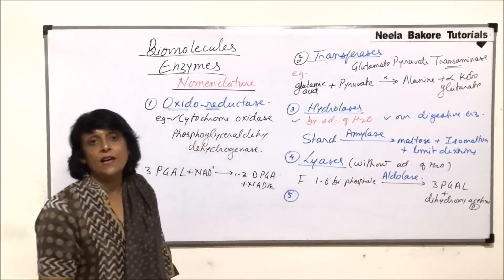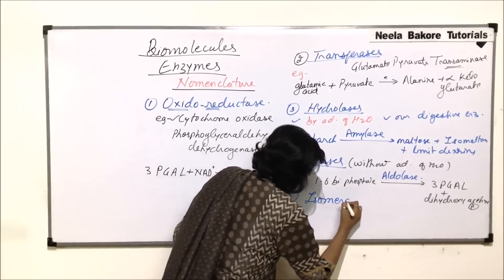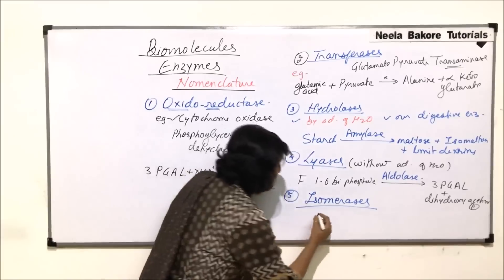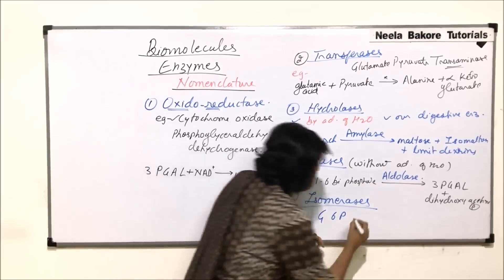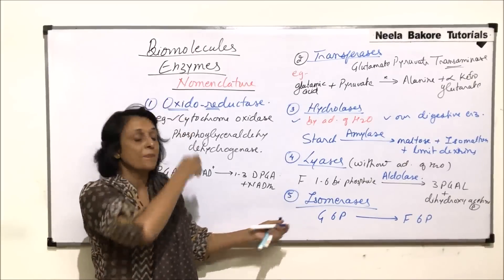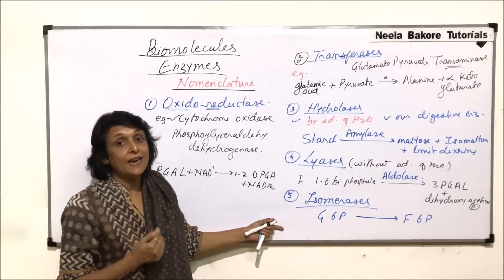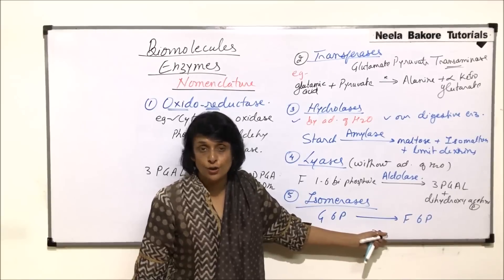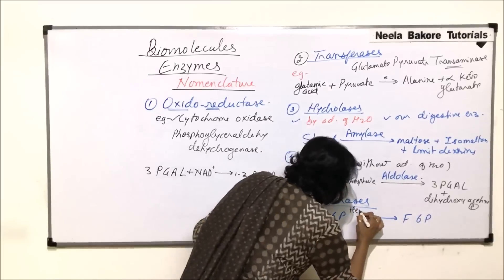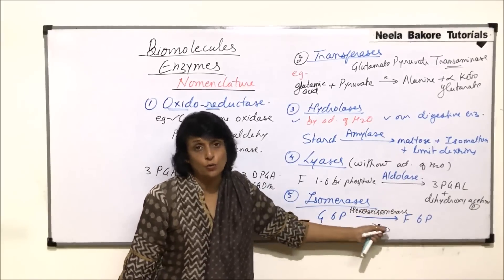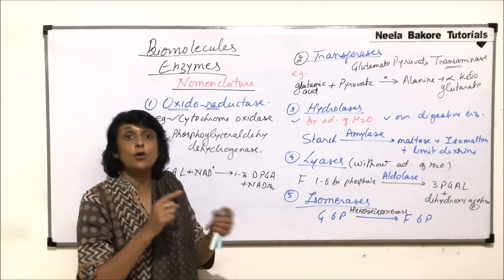The fifth category of enzymes is isomerases. Isomerases convert one isomer into another. For example, in glycolysis, glucose-6-phosphate is converted into fructose-6-phosphate. Glucose and fructose are isomers, and the enzyme that helps is an isomerase. We can call it glucose-fructose isomerase, or since both are hexose sugars, hexose isomerase. If the reaction were reversed, we would call it fructose-glucose isomerase.